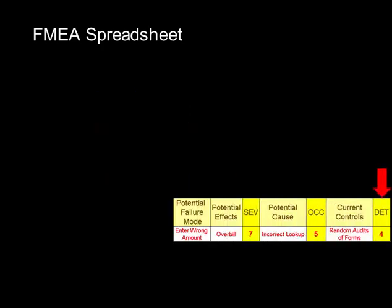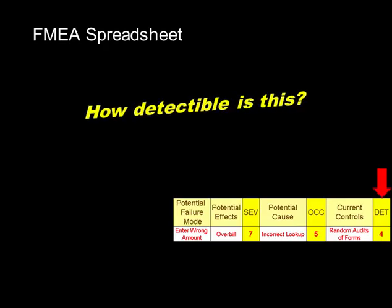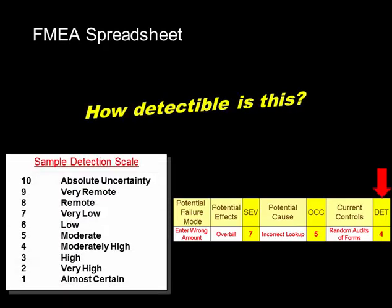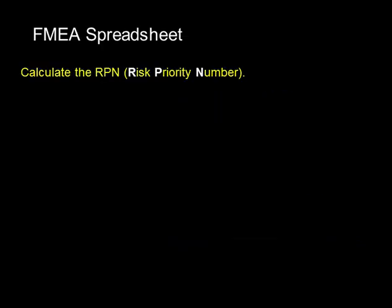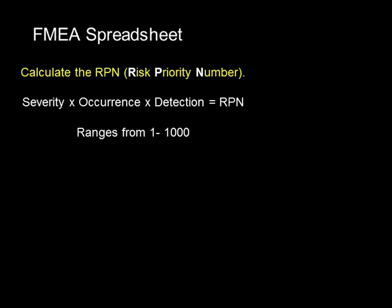After we've done that it's time to quantify one last time with what's called detectability. We're going to say how detectable is this problem, using a ten-point scale. A one means we're almost certain of detecting this well in advance, where ten is absolutely uncertain until after the failure. Once we have these numbers they all roll up into what's called an RPN, or risk priority number, which is severity times occurrence times detection. Because these are on a one-to-ten scale, this will give you a risk quantification number ranging from one to one thousand.